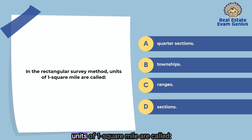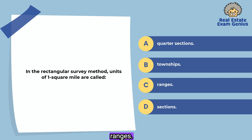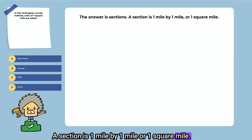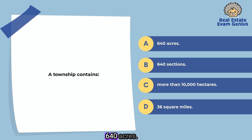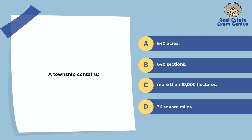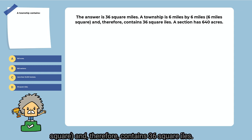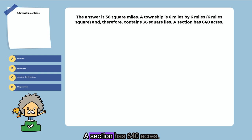In the rectangular survey method, units of one square mile are called: quarter sections, townships, ranges, or sections. The answer is sections. A section is one mile by one mile, or one square mile. A township contains: 640 acres, 640 sections, more than 10,000 hectares, or 36 square miles. The answer is 36 square miles. A township is 6 miles by 6 miles and therefore contains 36 square miles. A section has 640 acres.